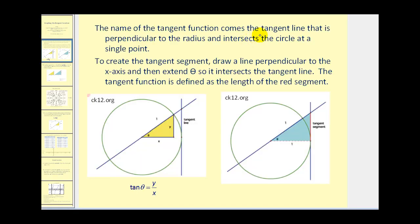The name of the tangent function actually comes from the tangent line that is perpendicular to the radius and intersects the circle at a single point. To create a tangent segment, we draw a line perpendicular to the x-axis and then extend theta so it intersects the tangent line.